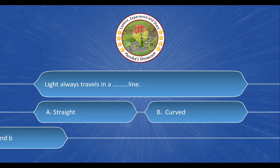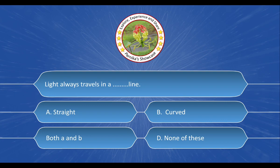Next question is, light always travels in a blank line. And the options are A. Straight, B. Curved, C. Both A and B, D. None of these. And the correct answer is option A, Straight.